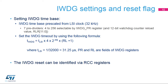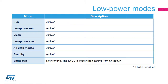Note that the reset and clock controller, or RCC, of the product provides registers giving the source of the reset. In that way, the application can check if a reset is caused by an independent watchdog. The IWDG can be active in all modes except in shutdown mode. When the product exits from shutdown, the IWDG registers are set to their initial values.